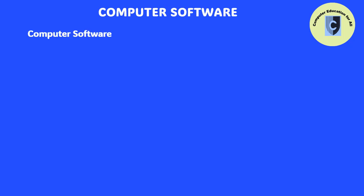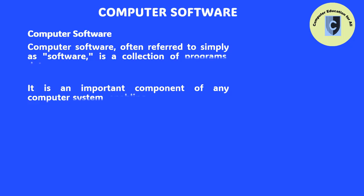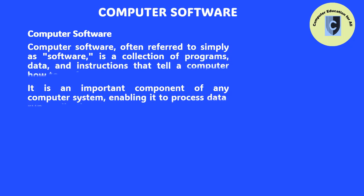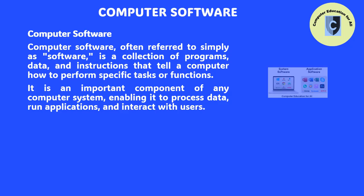Computer software, often referred to simply as software, is a collection of programs, data, and instructions that tell a computer how to perform specific tasks or functions. It is an important component of any computer system, enabling it to process data, run applications, and interact with users.